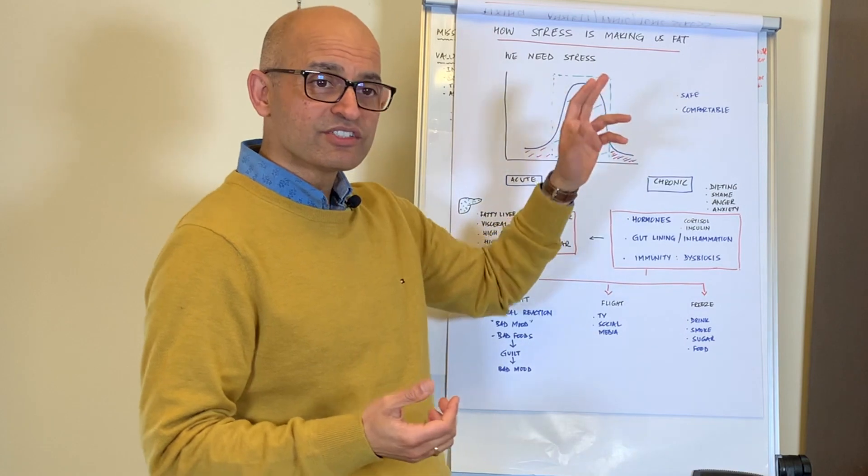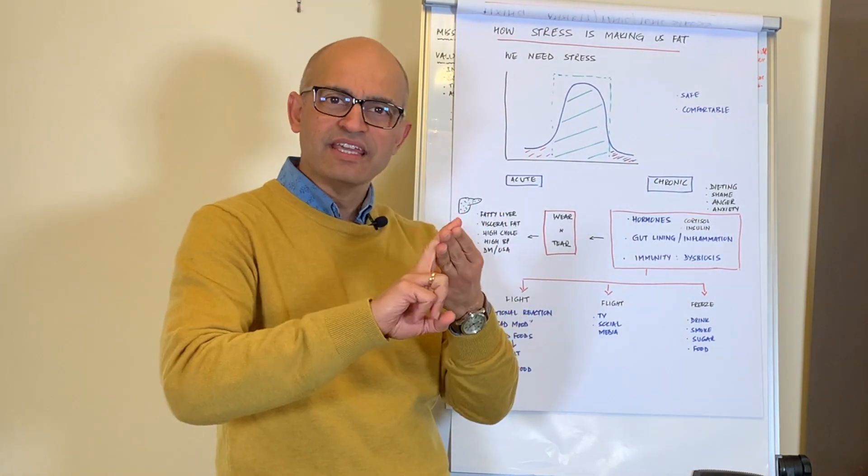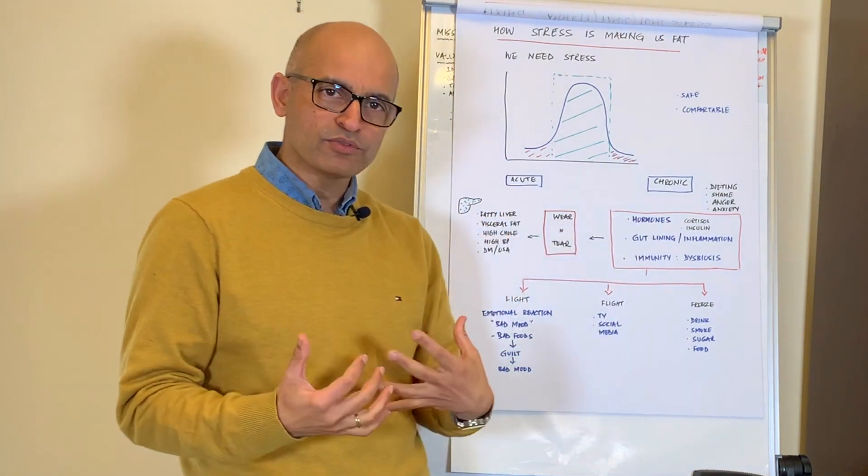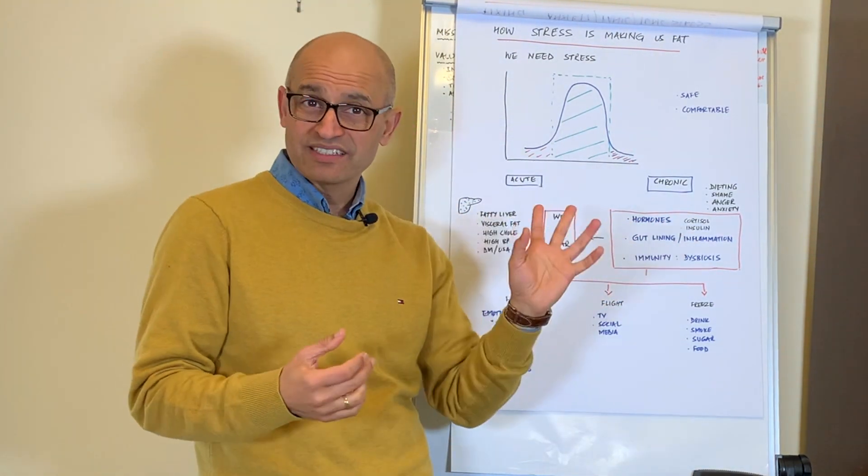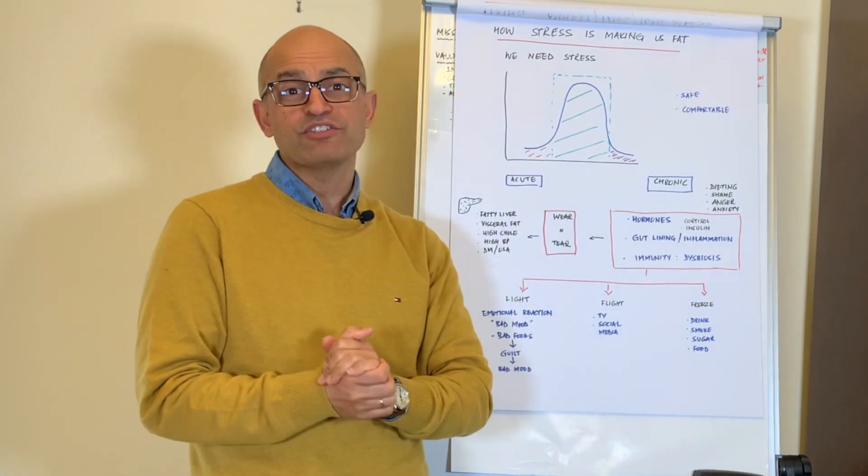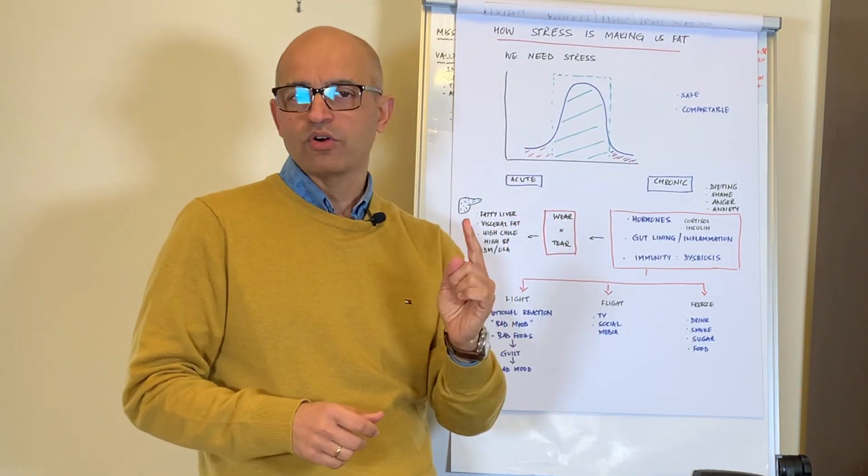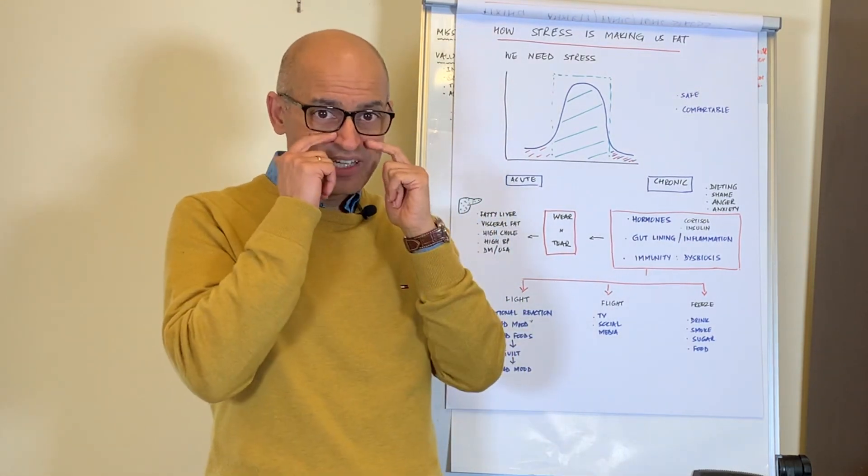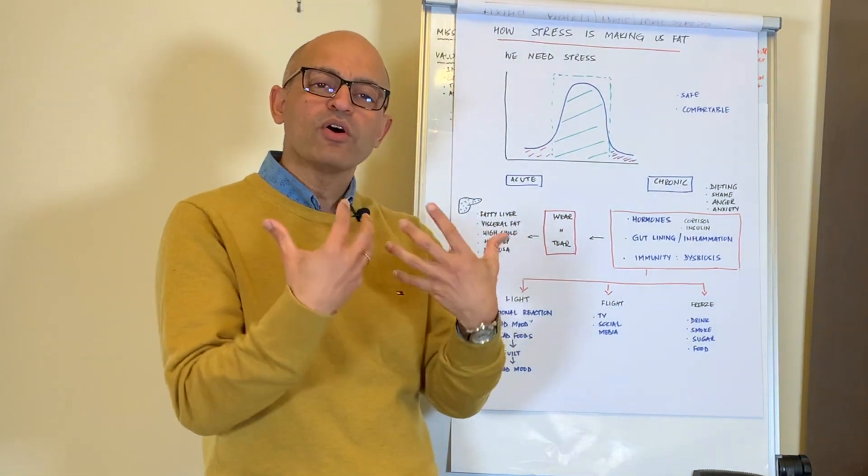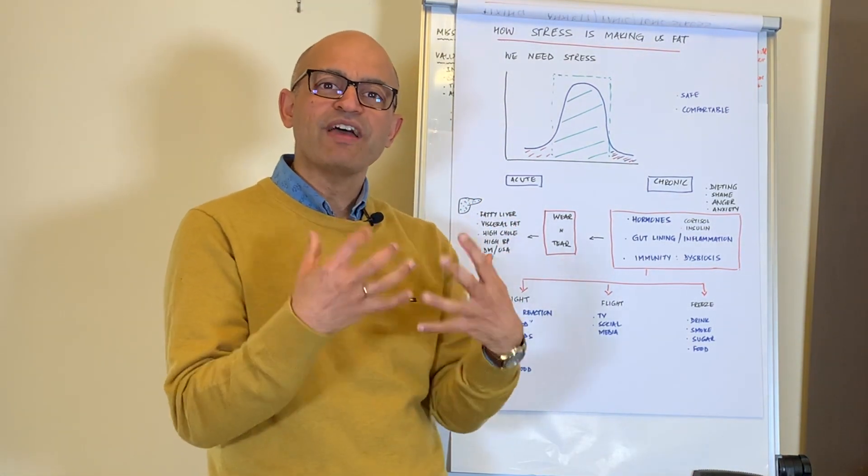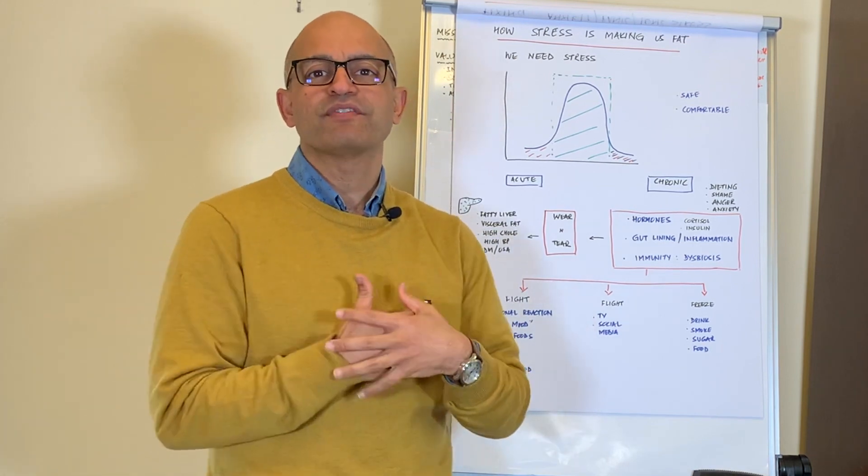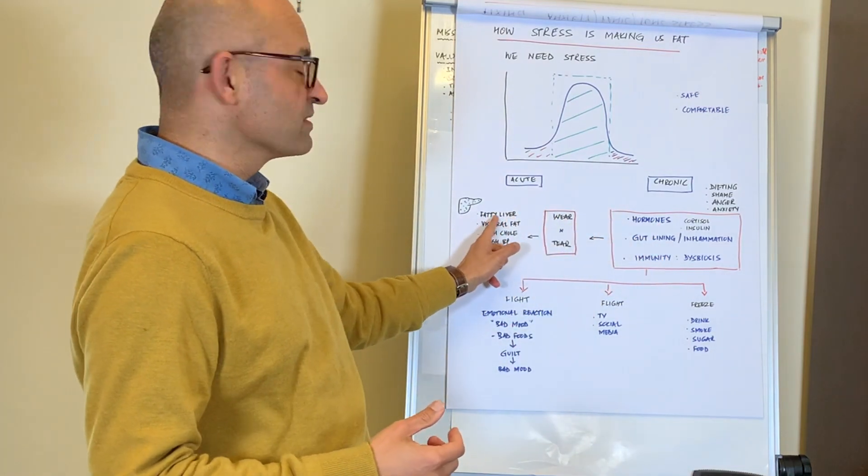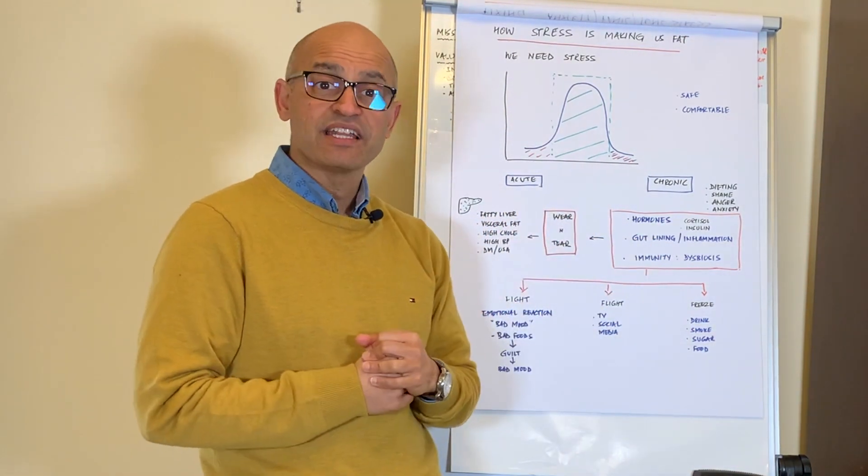And friends what chronic stress does is three key things, and this is crucial to understand. It plays or it mucks up with our hormones. Two key hormones that are discussed, and there are several others, but the two key hormones that you need to know about: one is cortisol. Cortisol is the stress hormone produced by the adrenal glands and what it does is it actually causes preferential deposition of fat in the middle part of the abdomen, in the visceral fat. It leads to a condition called fatty liver which I've discussed separately in another video.